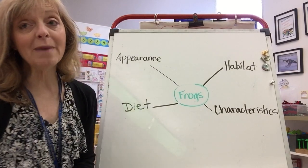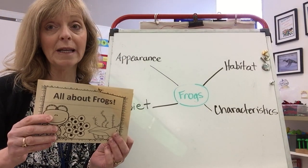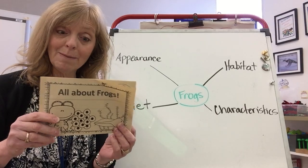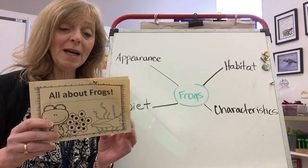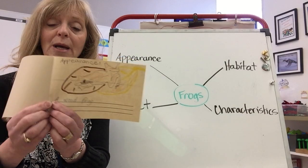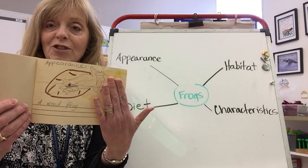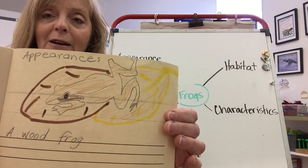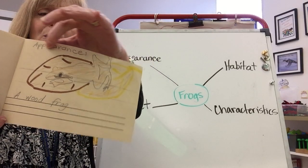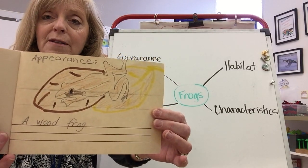Now when we were making this booklet, I am very sorry, but page two is missing and page two was supposed to say 'appearance.' So there will be a page on your last page that is blank. I've drawn my little frog there. We want to talk about the appearance of frogs.